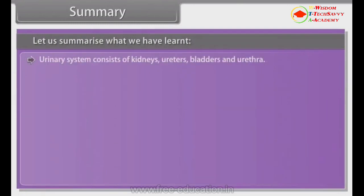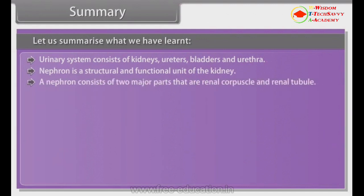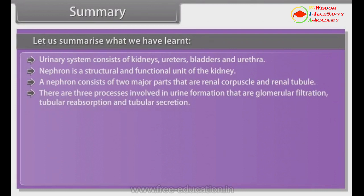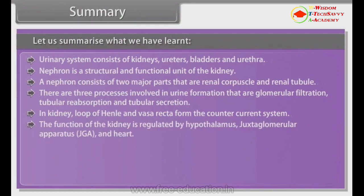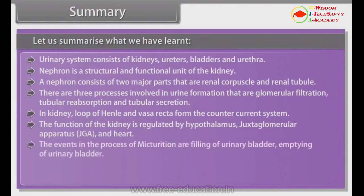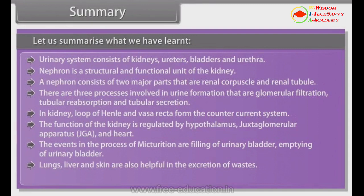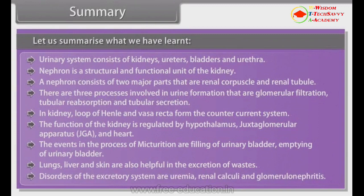Summary. The urinary system consists of kidneys, ureters, bladder, and urethra. The nephron is the structural and functional unit of the kidney, consisting of two major parts: the renal corpuscle and renal tubule. Three processes involved in urine formation are glomerular filtration, tubular reabsorption, and tubular secretion. In the kidney, the loop of Henle and vasa recta form the counter-current system. Kidney function is regulated by the hypothalamus, juxtaglomerular apparatus, and heart. The events in micturition are filling and emptying of the urinary bladder. Lungs, liver, and skin also aid in excretion. Disorders of the excretory system include uremia, renal calculi, and glomerulonephritis.